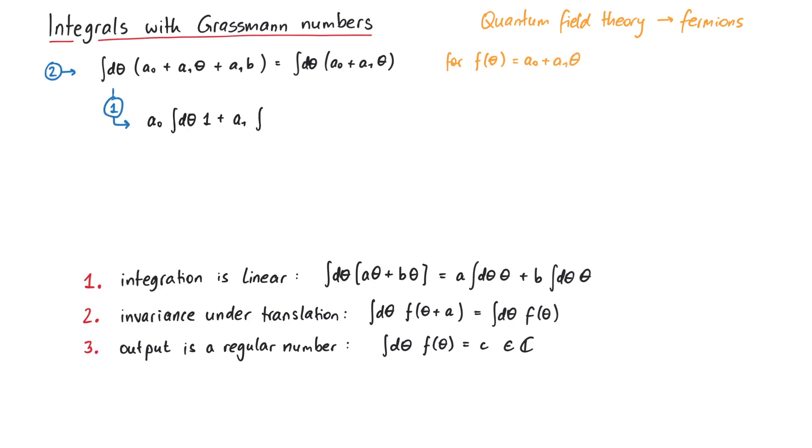Then, from the first condition, linearity, we know that we can split up the integral into several integrations. Since this must hold for any values of b, the integral of a1 must be 0, since there is no b on the right-hand side of the equation. That's already a very interesting result.